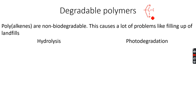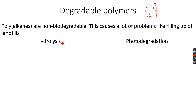Polyethene is completely non-polar and completely unreactive. Because of this lack of reactivity, it will not react with anything and hence will not break down — to break down it has to react with something. This causes a lot of problems like filling up of landfills, and so we need polymers that break down.